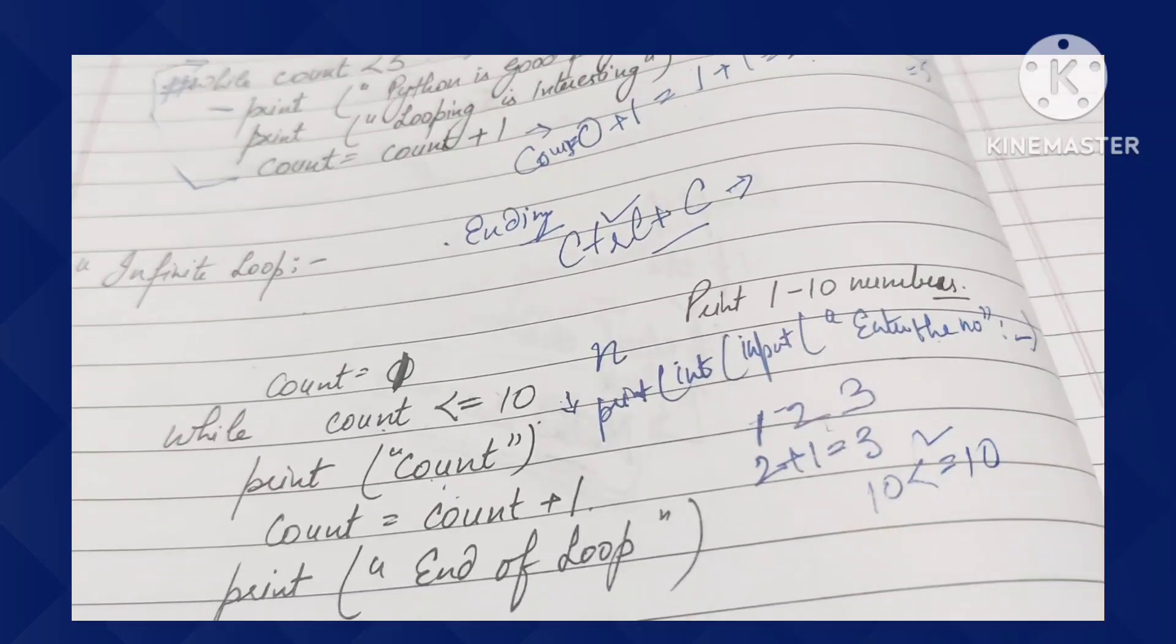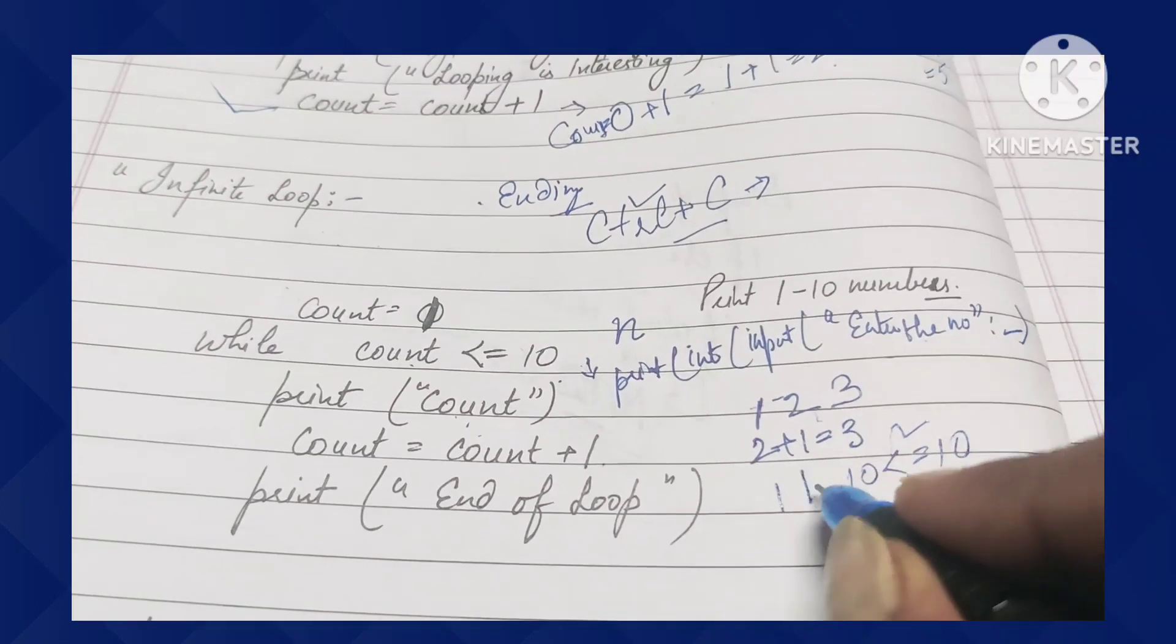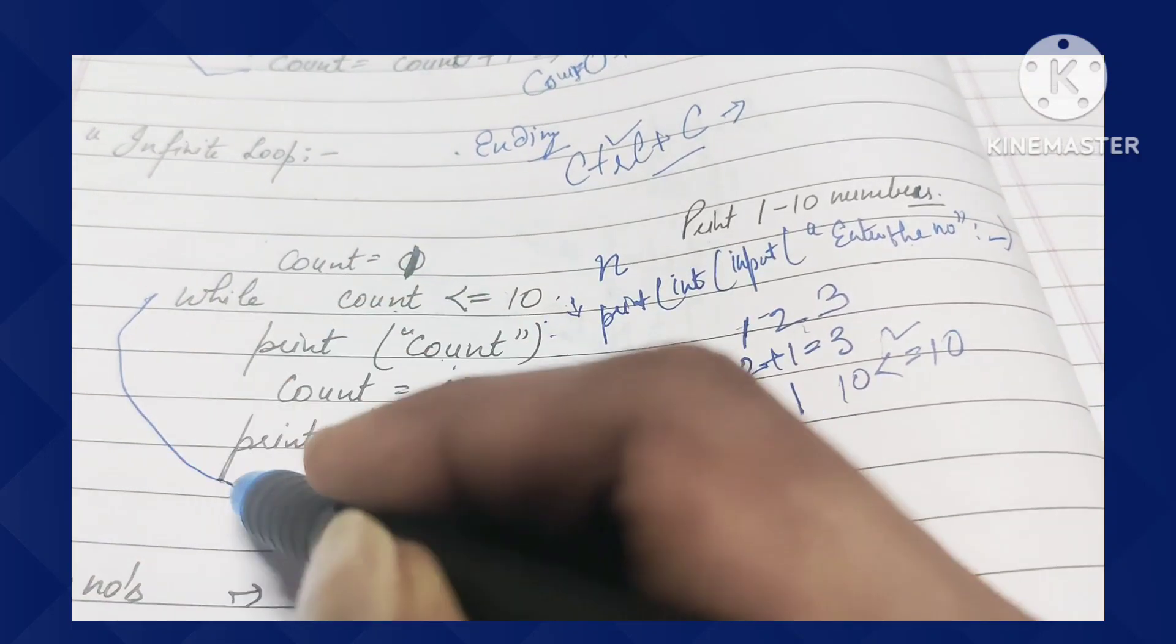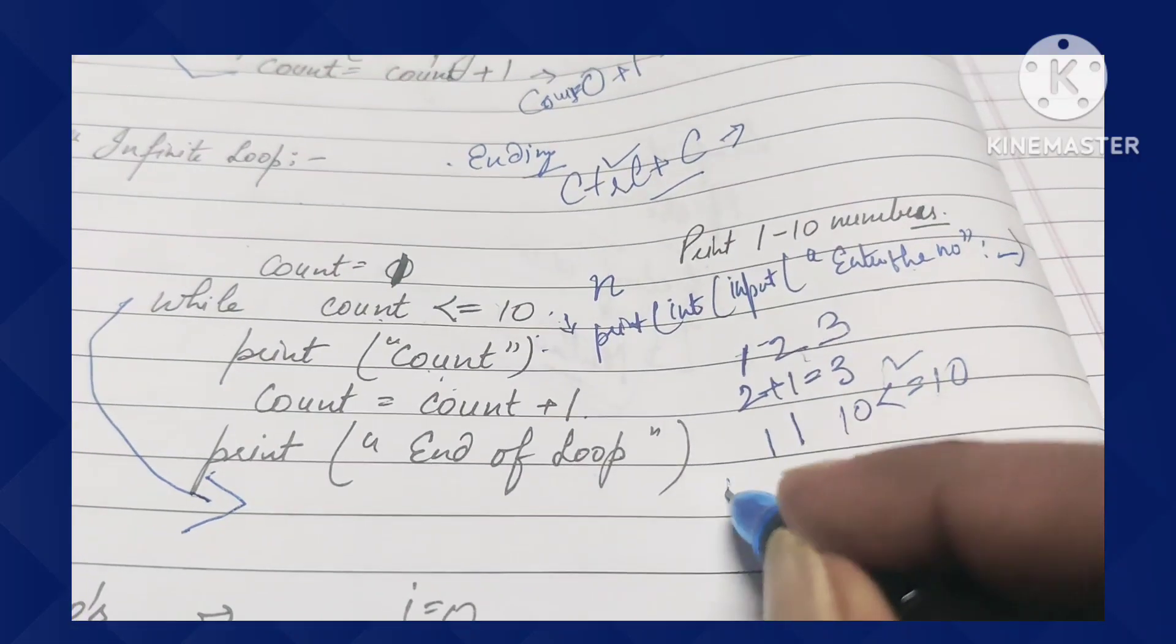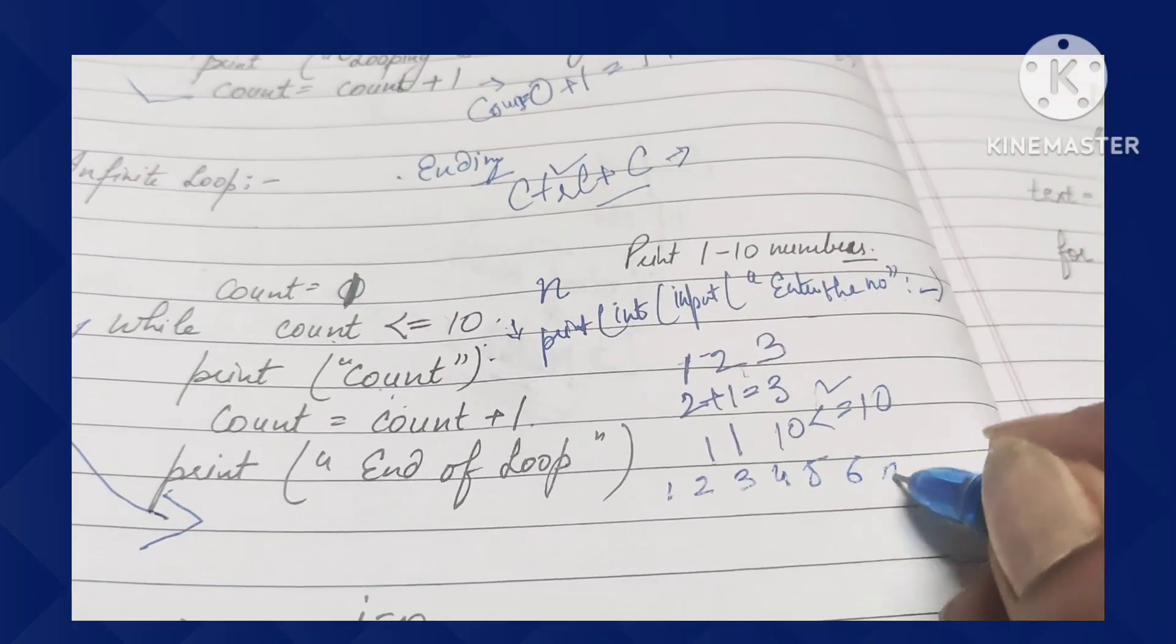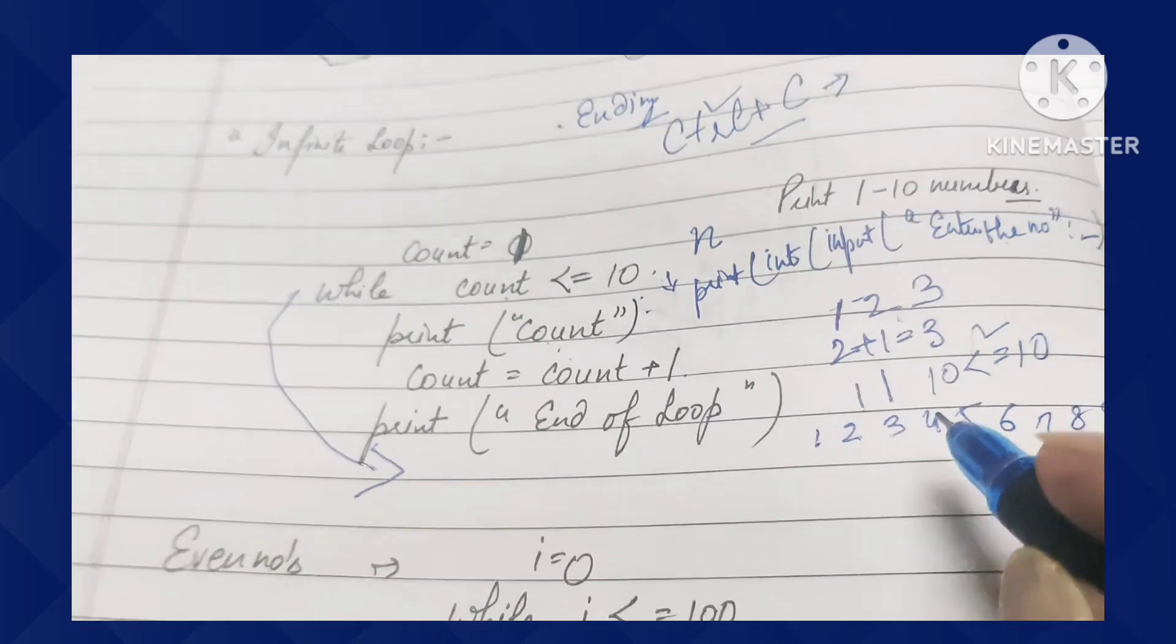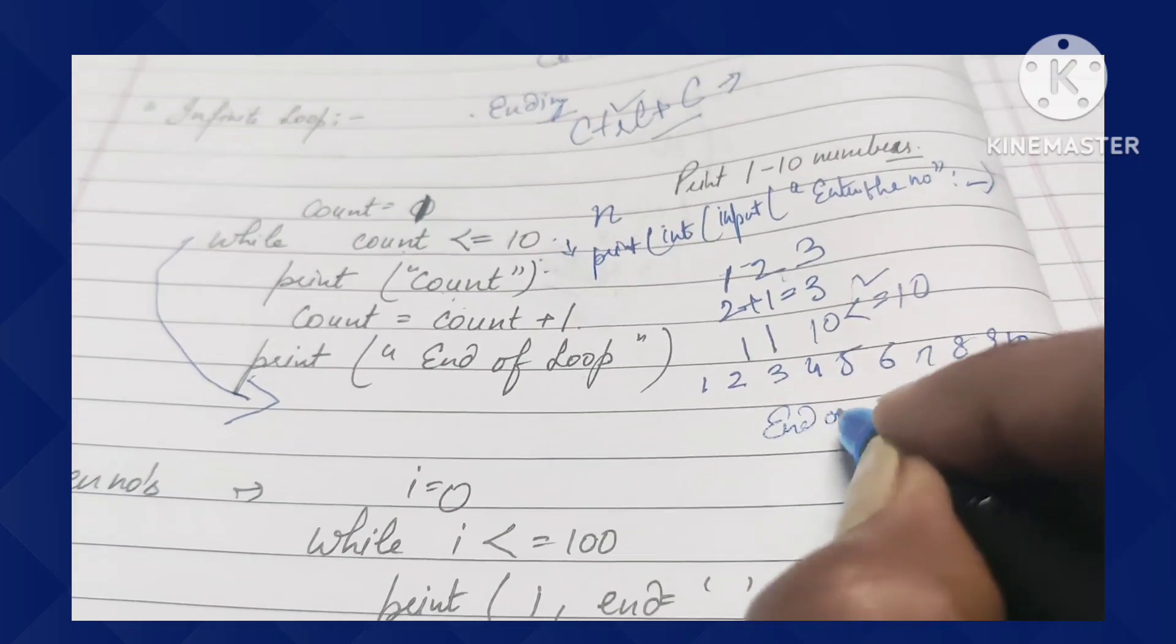Count plus one keeps increasing. When count is ten, ten less than equals to ten will also print because equals to condition is still true. As soon as count value increases to 11, eleven is not less than or equal to ten, so automatically control will leave its part and come out. After coming out, it has this message that says 'end of loop'. Numbers will print: one, two, three, four, five, six, seven, eight, nine, and ten. When ten numbers are printed, it leaves the condition, and after leaving, this 'end of the loop' message appears.